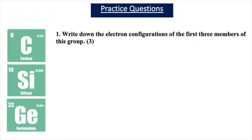In other video lessons we practised writing electron configurations. In group 4, it's important that you can write electron configurations for at least the first three members of the group. In this first practice question, have a go at writing the electron configurations for carbon, silicon and germanium.